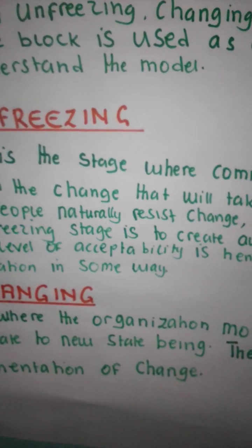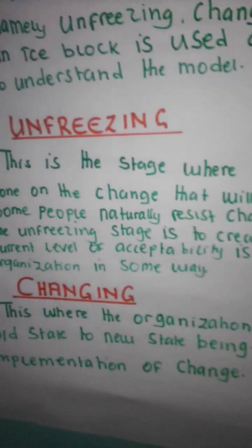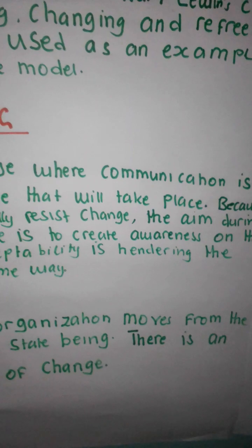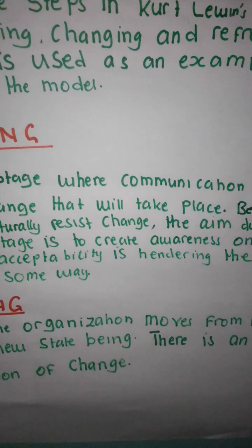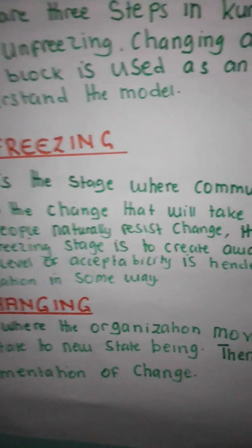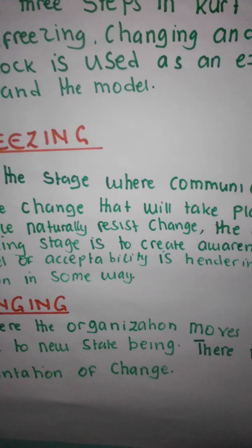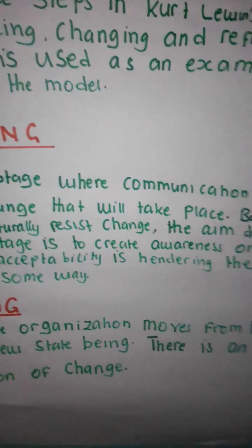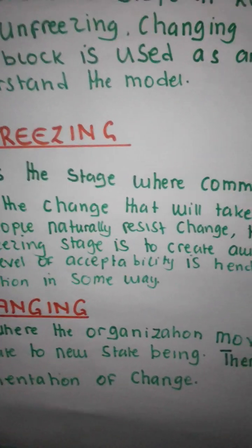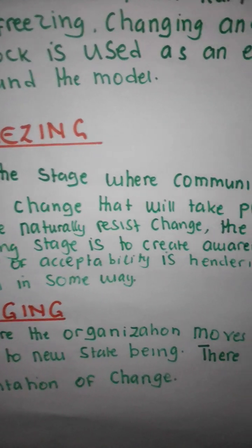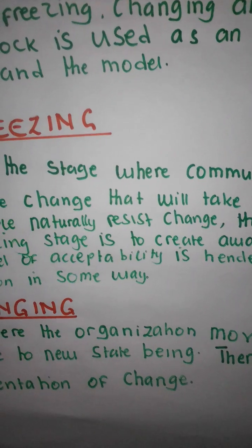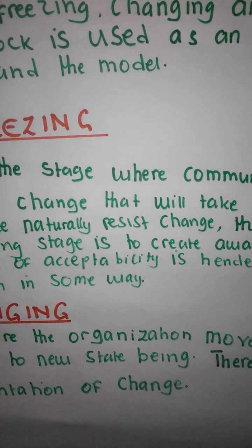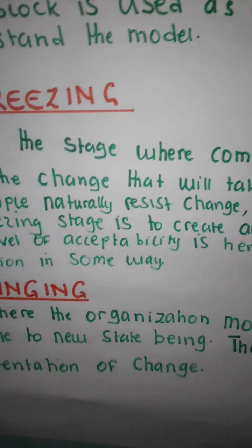In unfreezing, this is the stage where communication is done on the change that will take place, because some people naturally resist change. The aim during the unfreezing stage is to create awareness about the current level of acceptability which is hindering the organization in some way. You need to explain that the current things we are doing are hindering the organization, and therefore we need to change so that we improve. Communication is the way.